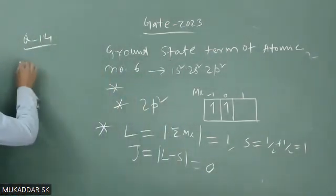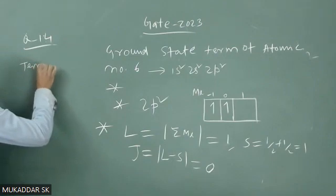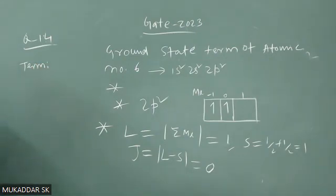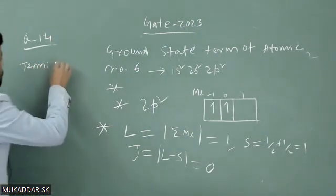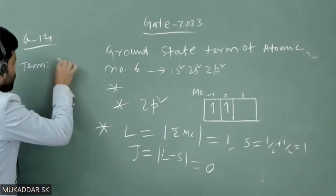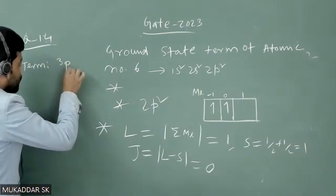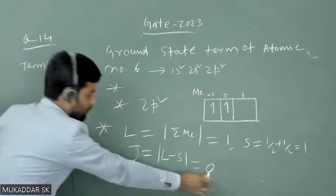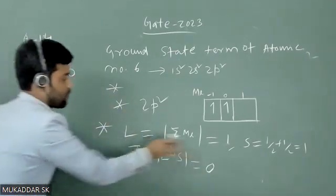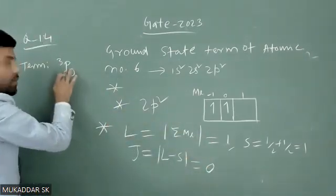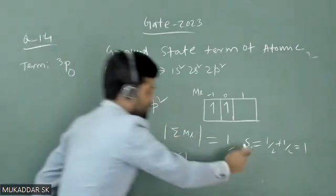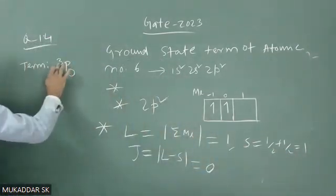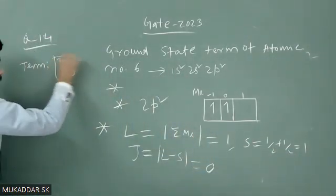The term will be ³P₀ because J value is 0, L equals to 1 corresponding to P, and S equals to 1 corresponding to multiplicity 3. This will be the ground state term. Thank you.